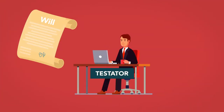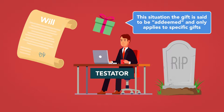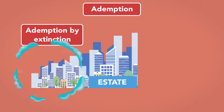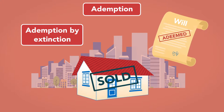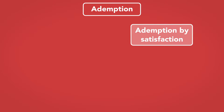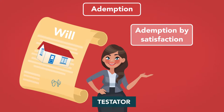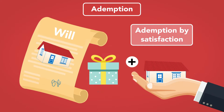Ademption. Ademption occurs when a testator lists a specific gift in the will, but at the time of death, the testator does not own the item, or the item is no longer part of the estate. In this situation, the gift is said to be adeemed. Ademption only applies to specific gifts. Ademption comes in two general categories, ademption by extinction and ademption by satisfaction. An ademption by extinction occurs when an item to be devised is no longer a part of the testator's estate at death. For example, where a testator sold her home prior to death, a gift of the home through the will was adeemed by extinction. Ademption by satisfaction occurs when an item to be devised is given by the testator to the beneficiary during life, in satisfaction of the devise. The doctrine is designed to prevent a beneficiary who has received the intended gift from receiving an additional gift at the testator's death where that was not the testator's intention.